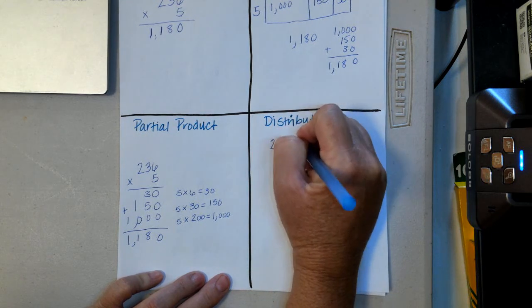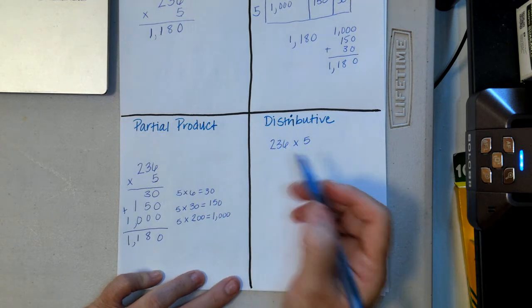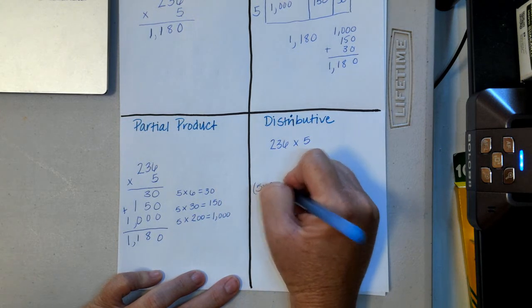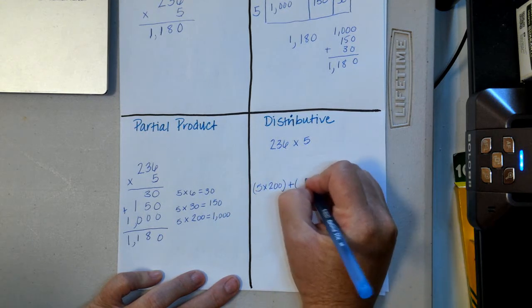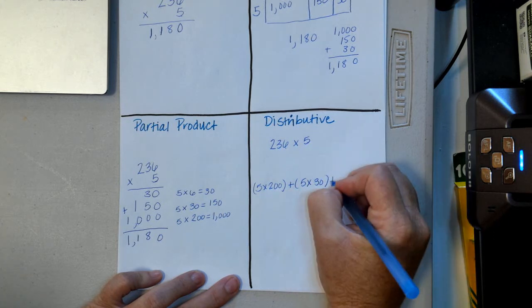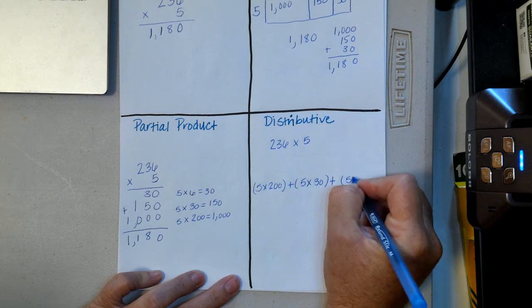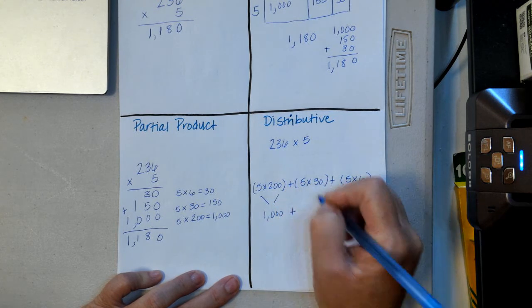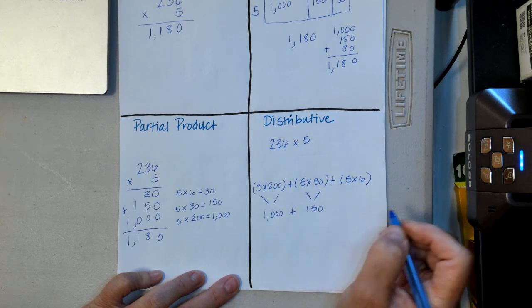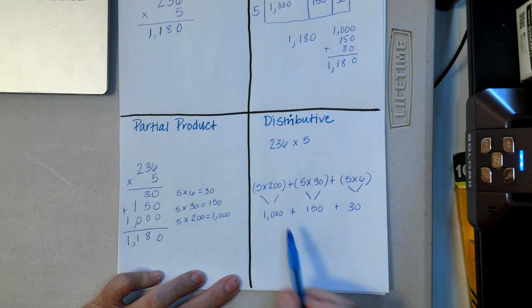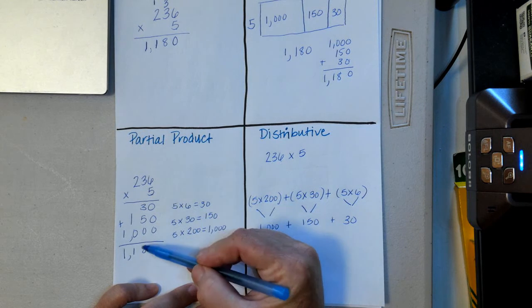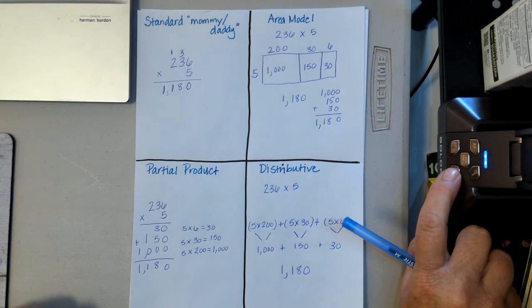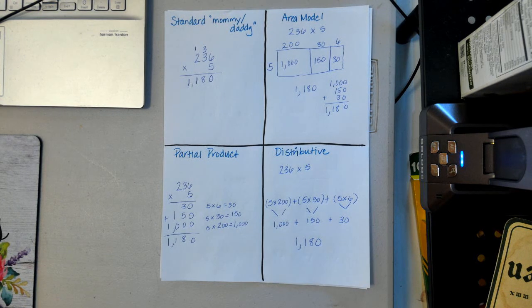Now I'll do the distributive property. I write 236 times 5 and break 236 up by place value: five times two hundred, plus five times thirty, plus five times six. Solving each part: five times two hundred is one thousand, five times thirty is one hundred and fifty, five times six is thirty. Adding those together gives one thousand one hundred and eighty. That's all four ways to solve multiplication!